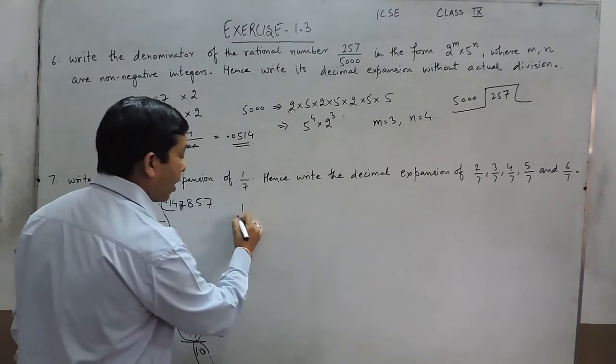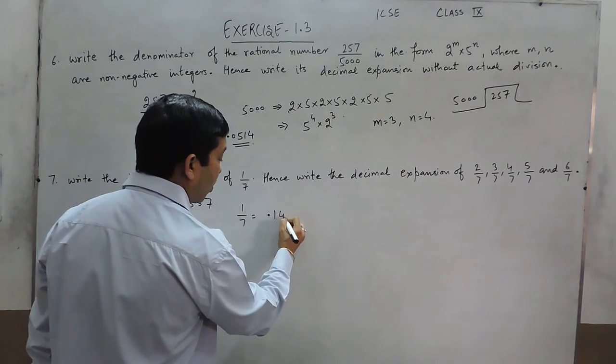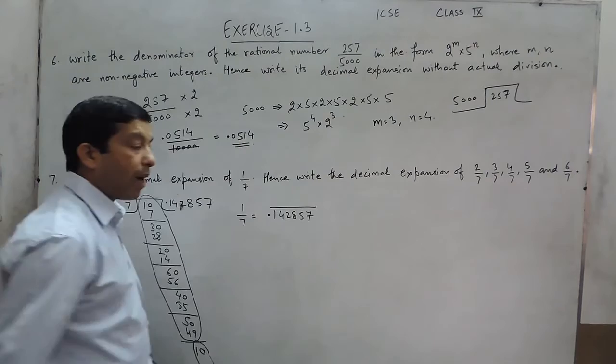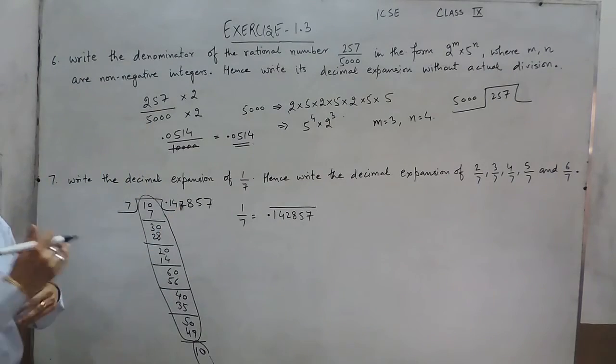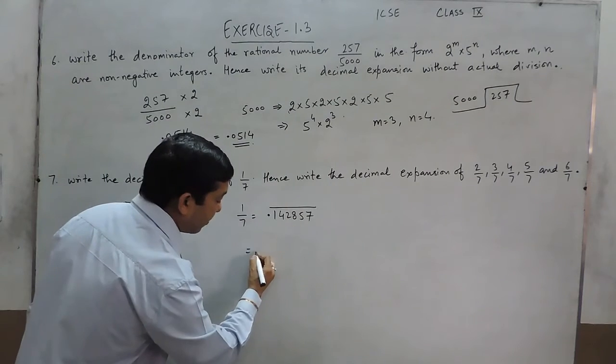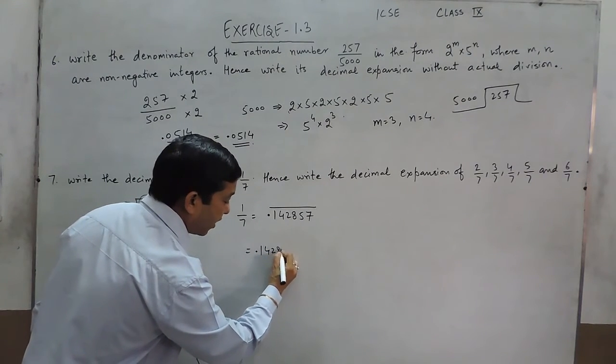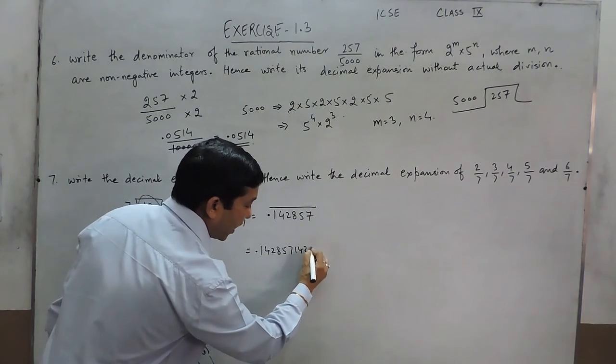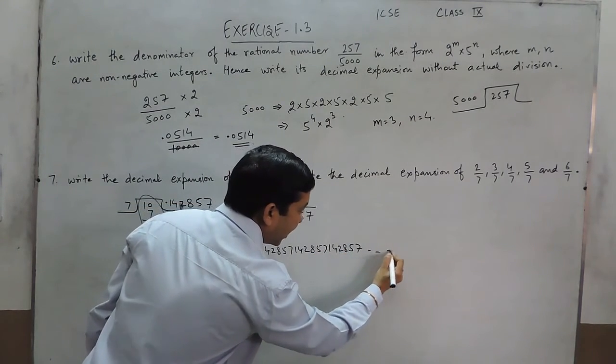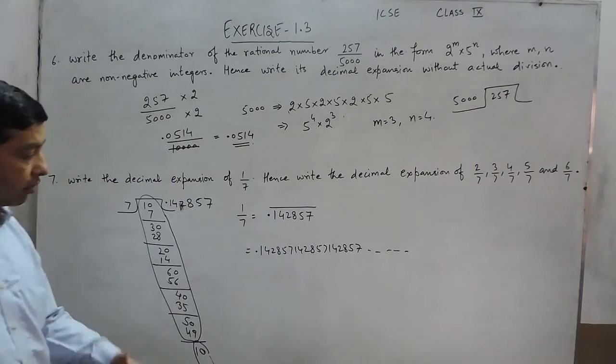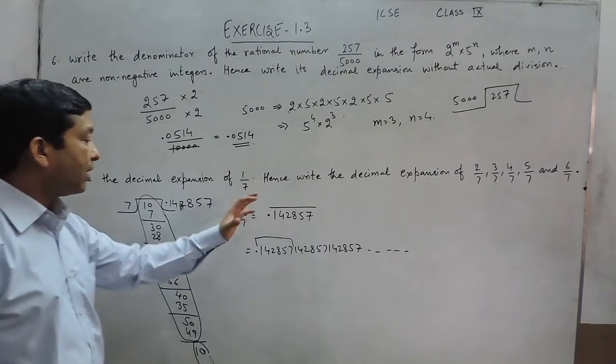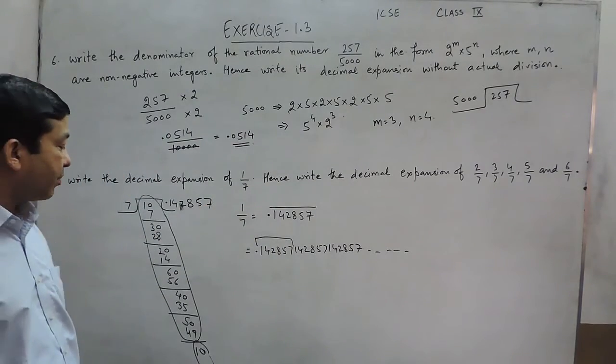That means 1 upon 7 can be written as 0.142857 with a bar. This bar means that 142857 will keep on repeating itself. This can be represented like 142857, 142857, 142857. So this is a non-terminating number which is repeating itself. So this is a non-terminating repeating decimal.